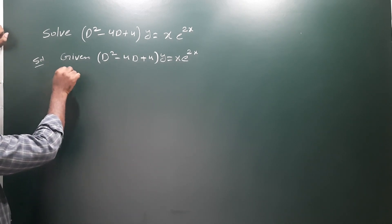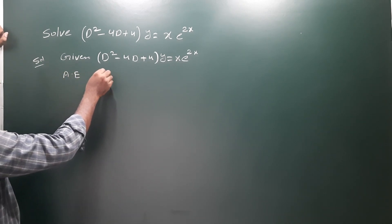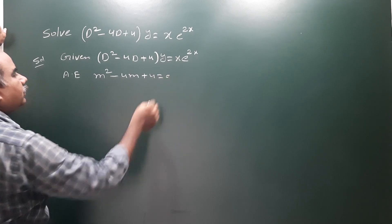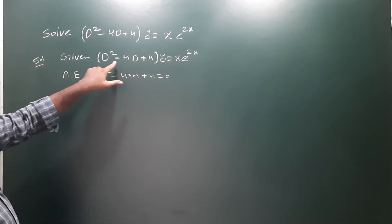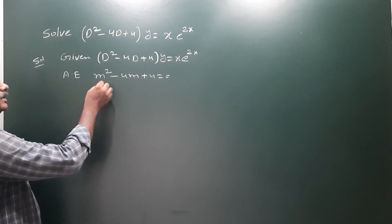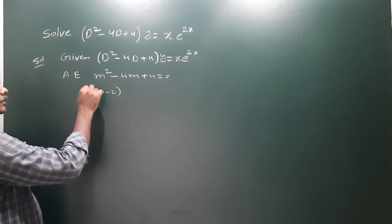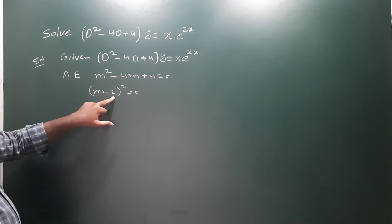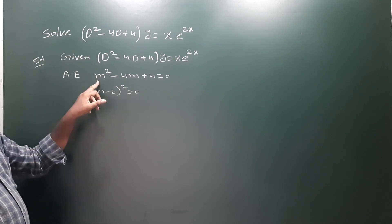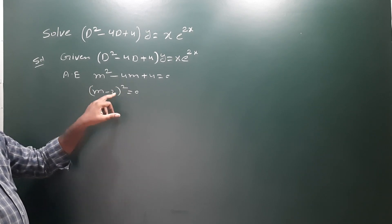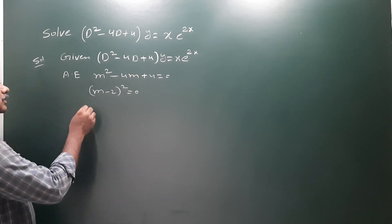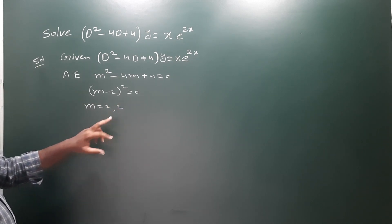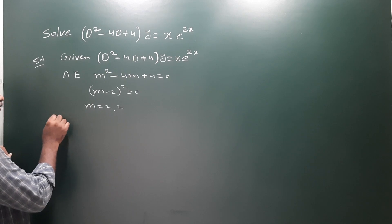First we have to write the auxiliary equation. The auxiliary equation means m² - 4m + 4 = 0. Here, instead of D we take m. This can be written as (m - 2)² = 0, since it is a perfect square — m² - 2(m)(2) + 2² = m² - 4m + 4. So (m - 2)² = 0 gives m = 2, 2, meaning we have two equal roots.